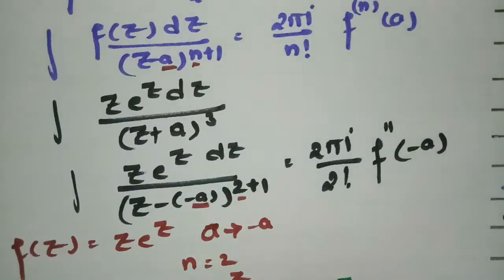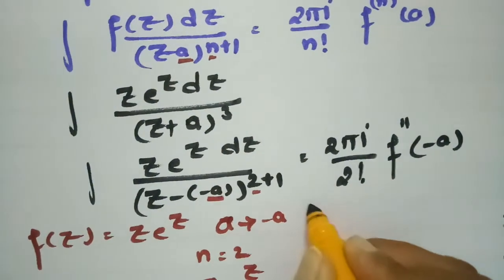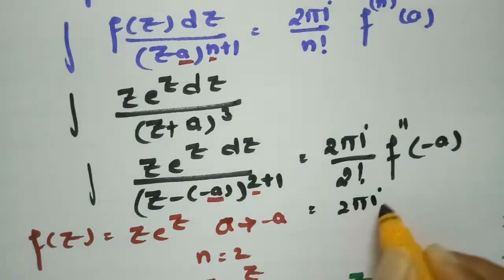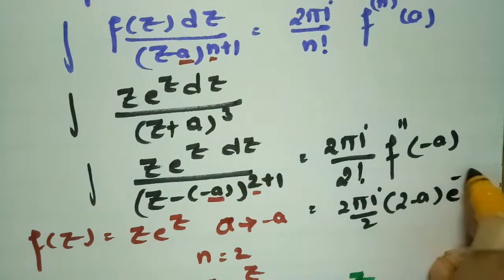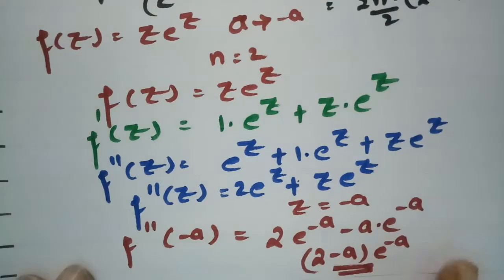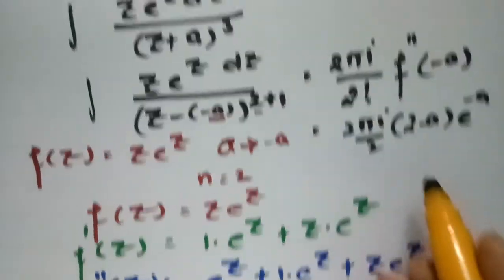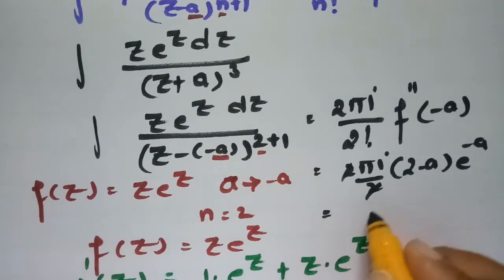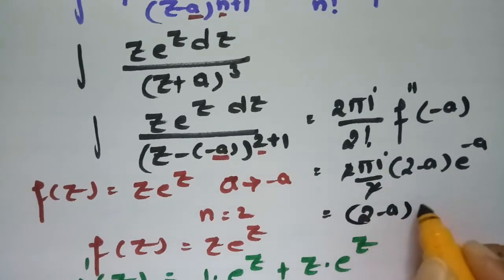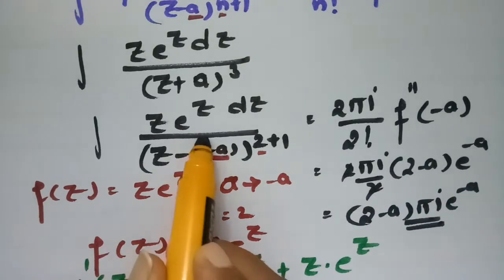Substituting all values into the formula: the integral equals 2πi / 2 times (2 - a)e^(-a). Since 2 cancels, the final answer is πi(2 - a)e^(-a). This is the value of the given integral.